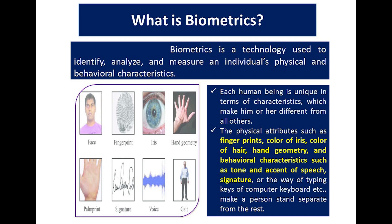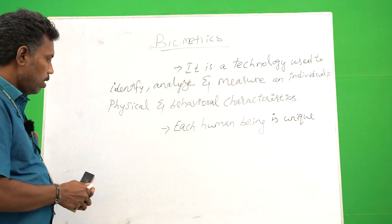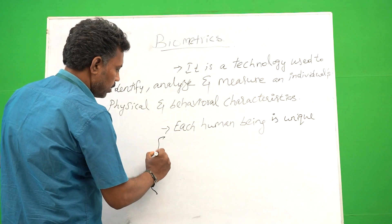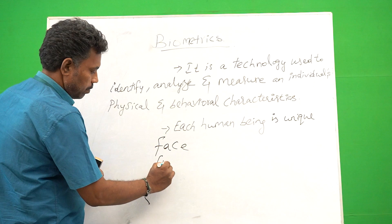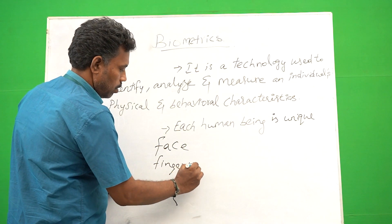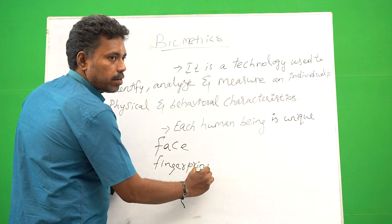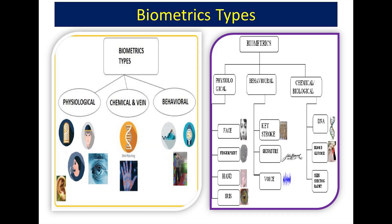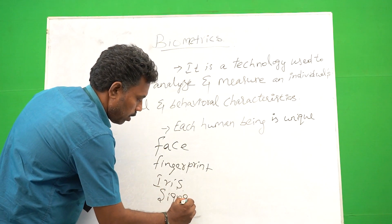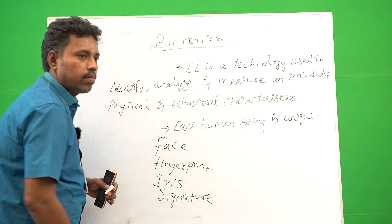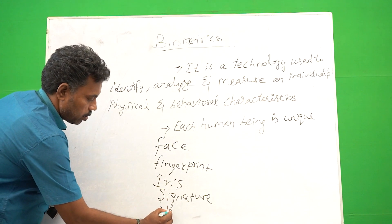It makes him or her different from all others. For example: face, face direction, and fingerprint. Then iris — it is like an eye. Then after that, palm print. Then another very familiar one, signature recognition. Then after, voice recognition.